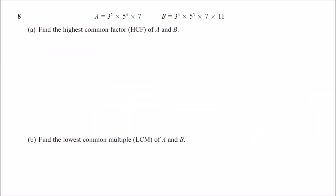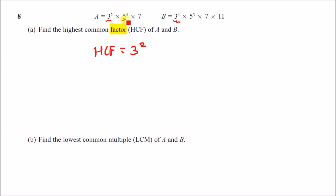Number eight: a and b are given in prime factor form. Part a: find the highest common factor. For HCF, find what both numbers have at least. Three squared vs three to the four — both have at least three squared. Five to the four vs five to the three — both have at least five cubed. Both have at least one seven. A doesn't have eleven, so no common factor of eleven. HCF is 3² × 5³ × 7.